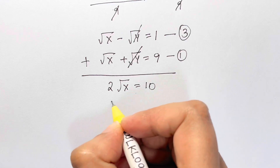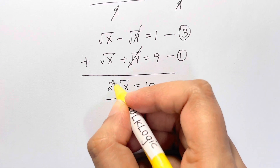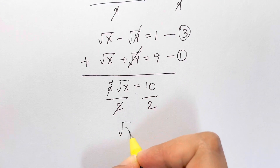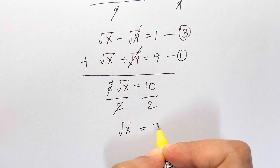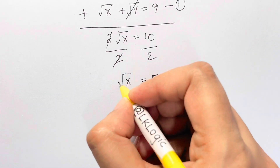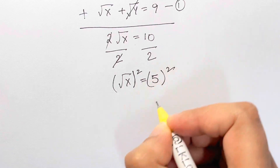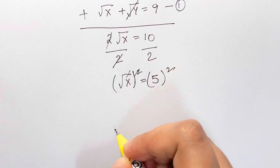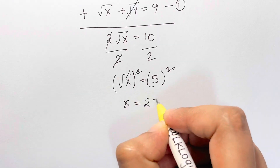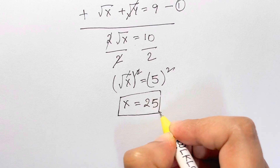Dividing both sides by 2, we get square root of x equals 5. To find x, we square both sides — the square root and square cancel — so x equals 5 squared, which equals 25.